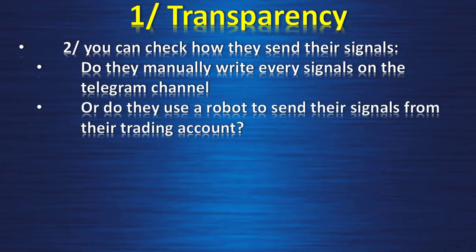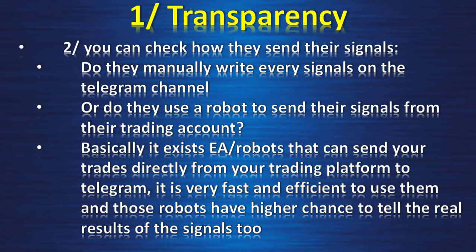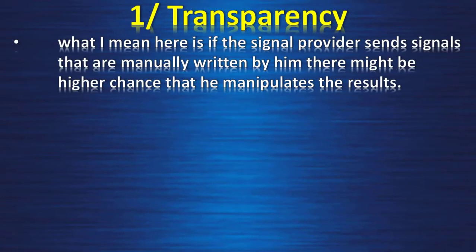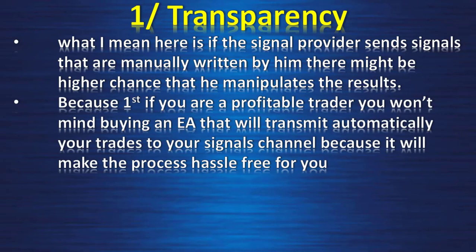Second, check how they send their signals. Do they manually write every signal on the Telegram channel, or do they use a robot EA to send their signals from their trading platform account to Telegram? Expert advisor robots can send your trades directly from your trading platform to Telegram. They are very fast and efficient, and those robots have a higher chance of reflecting the real result of the signals. If signals are manually written, there is a higher chance the provider manipulates the results.